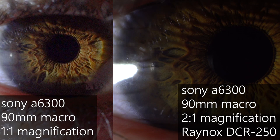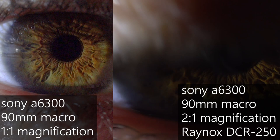This is a side-by-side comparison between the 90mm macro lens at one to one magnification and when it's combined with the Raynox DCR-250. Talking more details, this got a huge impact on your image.